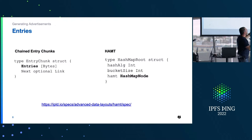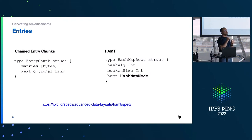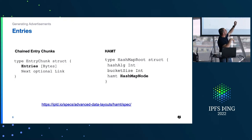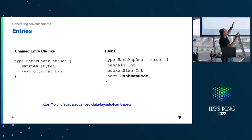The other type of entry is HAMT — a Hash Array Mapped Trie — an advanced data layer in IPLD. It is a prefix tree map, a way for you to define a map. This is a very recent addition. You can find the HAMT specification in the link below. Now I'll talk about why you would choose entry chunk versus HAMT.